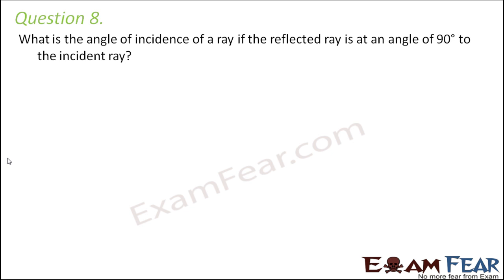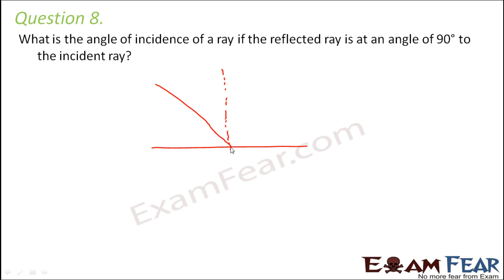Question number 8: what is the angle of incidence of a ray if the reflected ray is at an angle of 90 degrees to the incident ray? Let me draw it. This is the surface, this is the normal, this is the incident ray, and this is the reflected ray. The question says the reflected ray is at an angle of 90 degrees to the incident ray, so this angle between the incident ray and reflected ray is 90 degrees. This is angle I (angle of incidence) and this is angle of reflection.